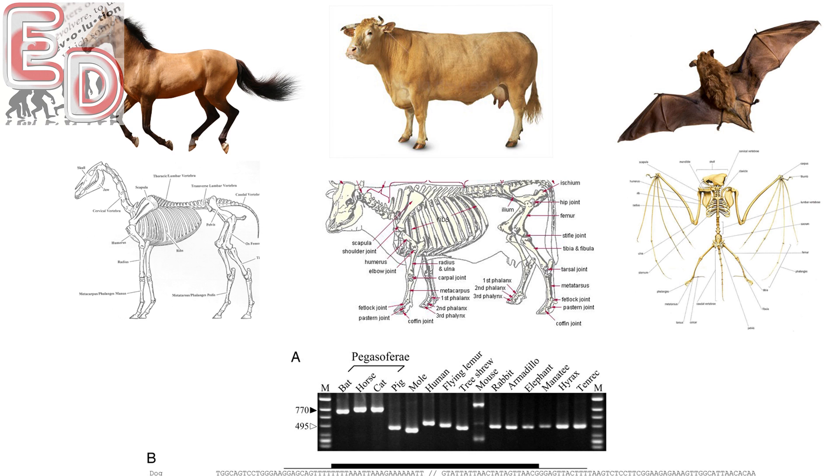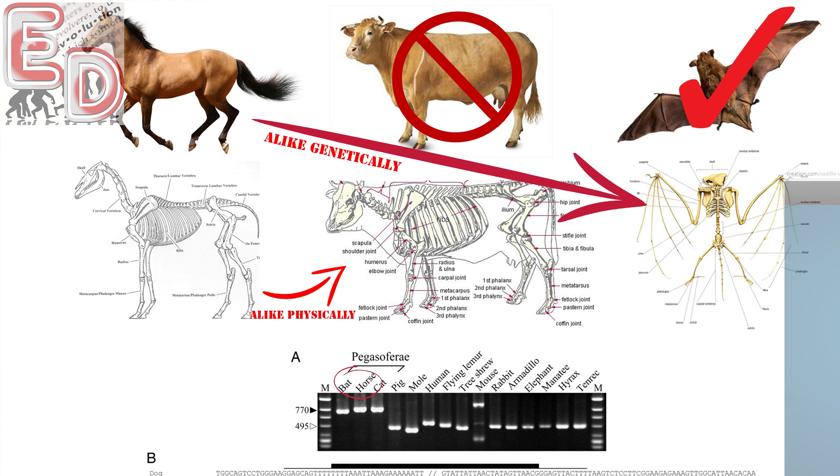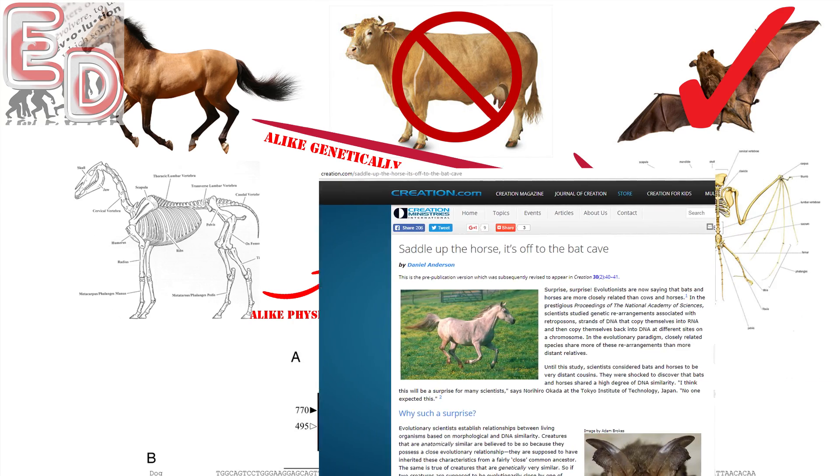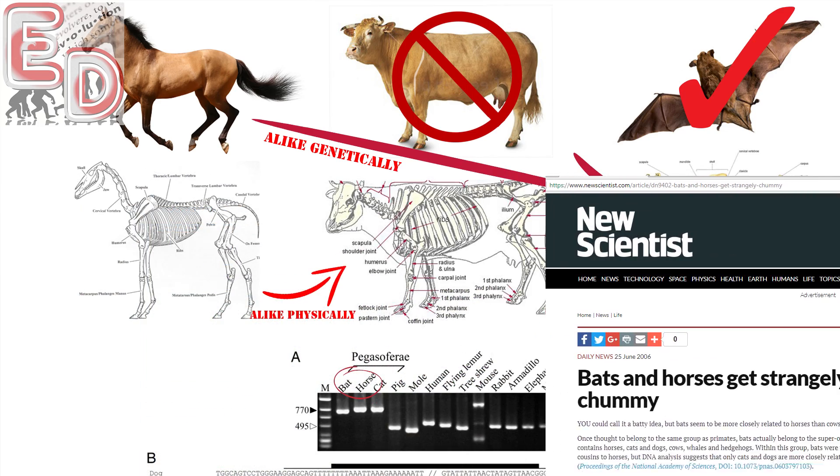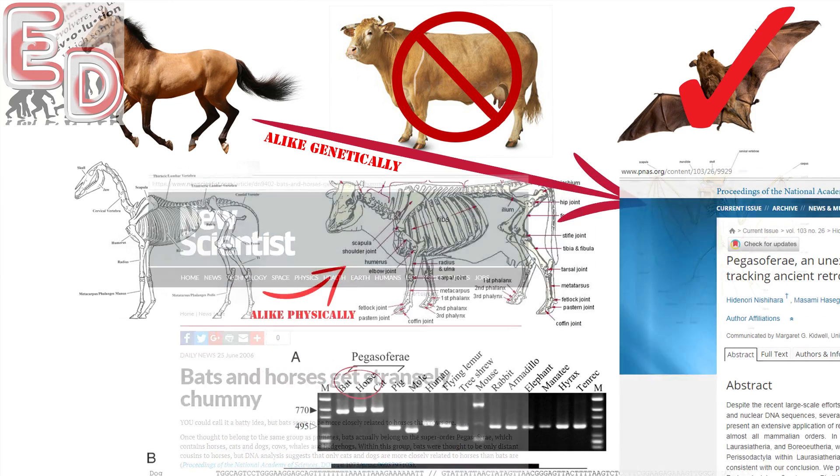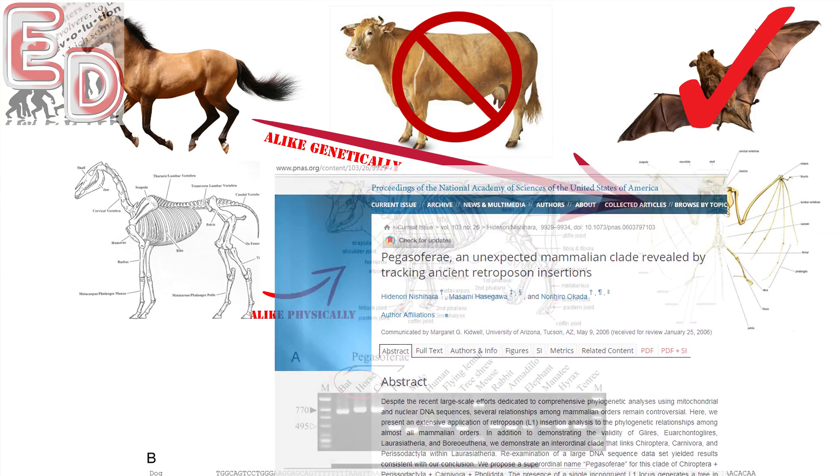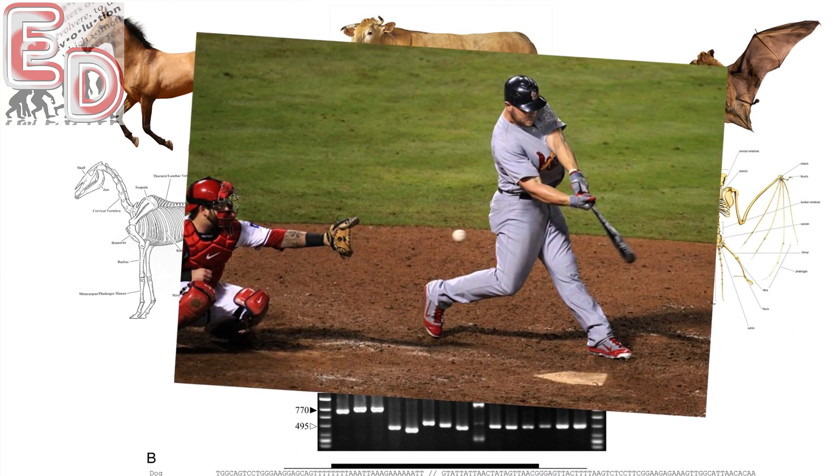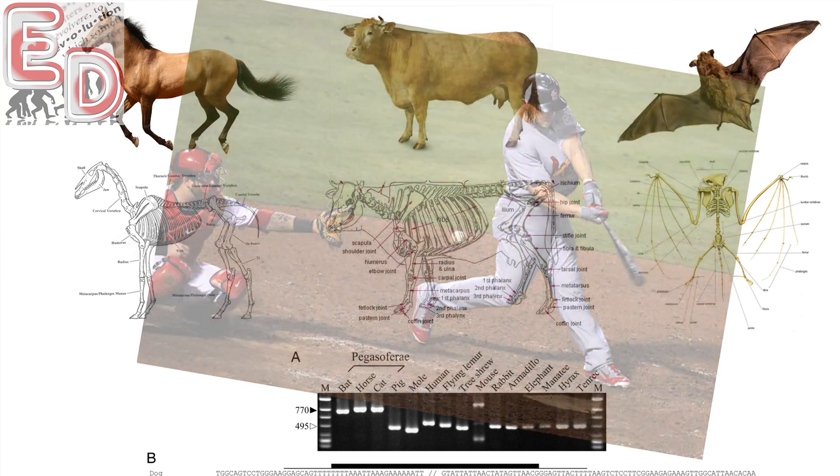However, horses are more genetically similar to bats than they are to cows. Again, the whole idea of common descent is that animals with more anatomical similarities would also share more genetic similarities. In this case, it's a big swing and a miss. Exceptions like this are what led to the revision of the tree of life.